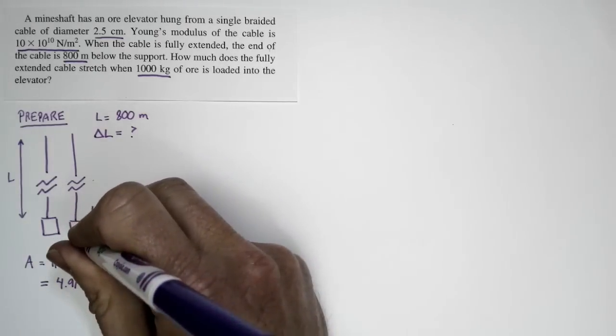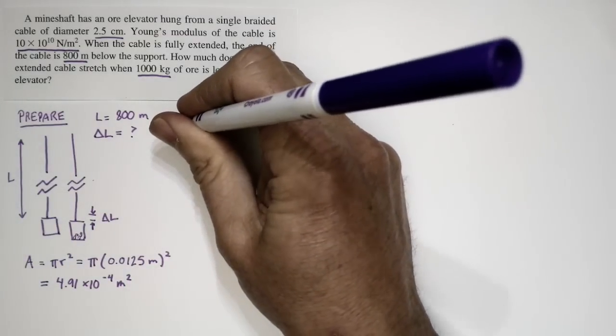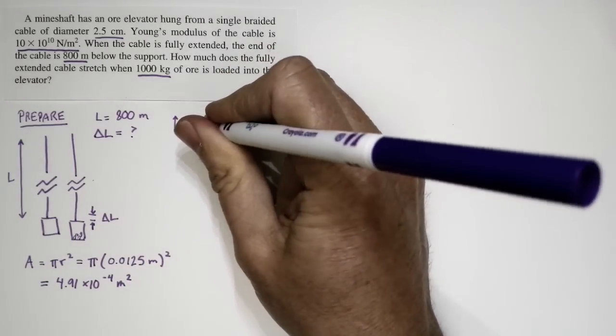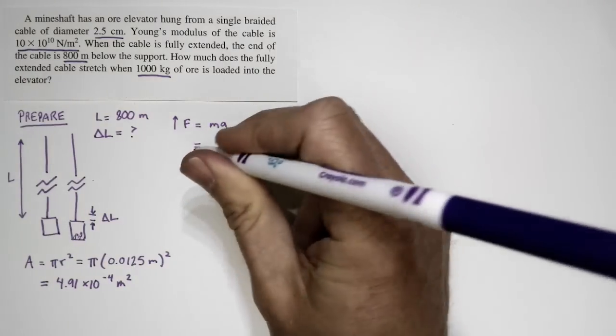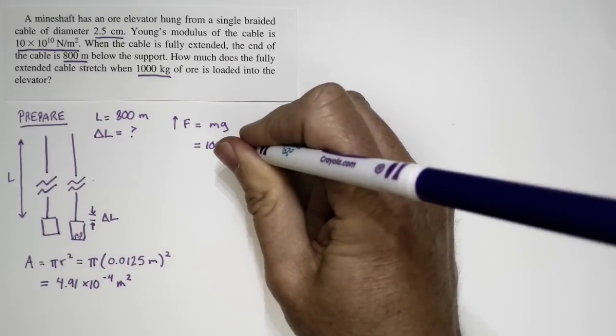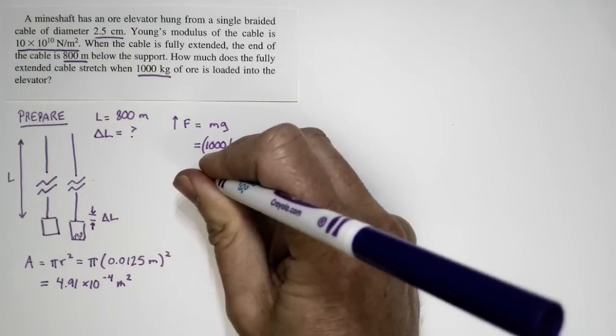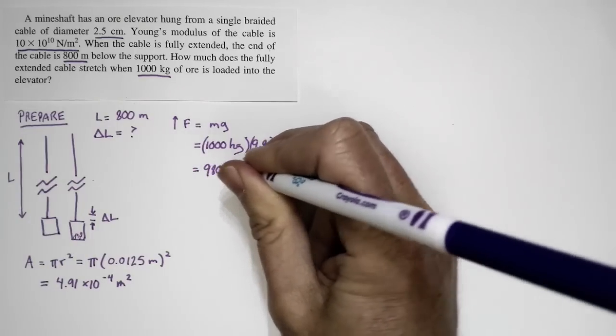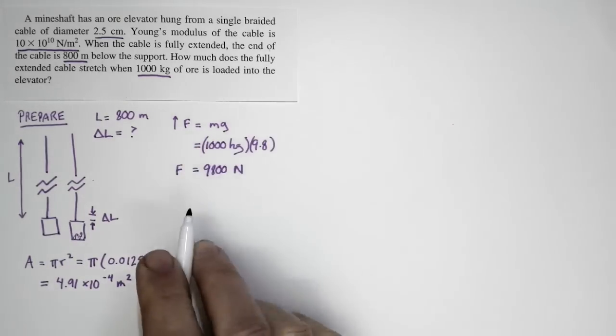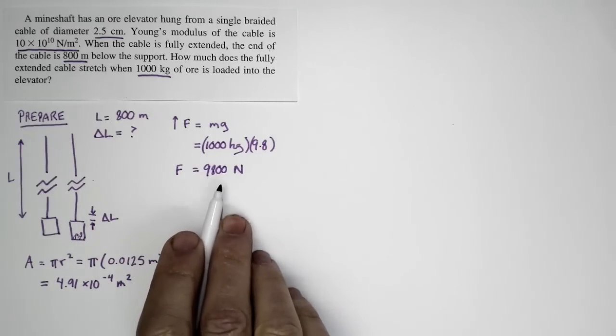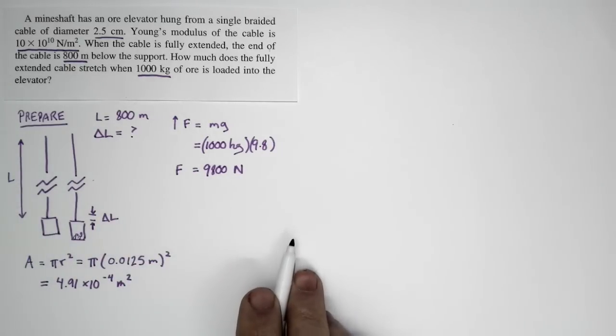If I put an additional mass into the car to make the cable stretch, the cable has to provide an upward force equal to the mass of what's loaded into it. The mass is 1,000 kilograms, so the weight is equal to 9,800 newtons. That additional force is going to produce a certain additional stretch, and that's what we're trying to solve for.